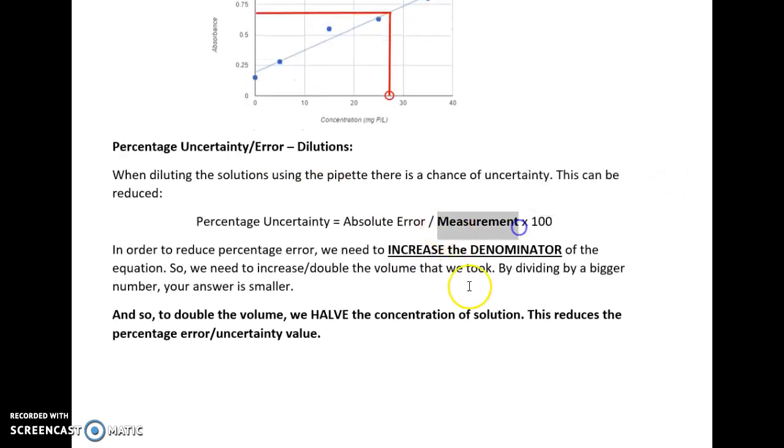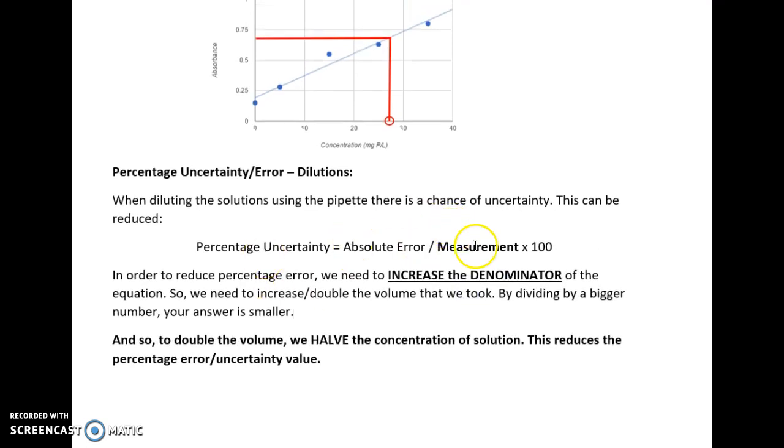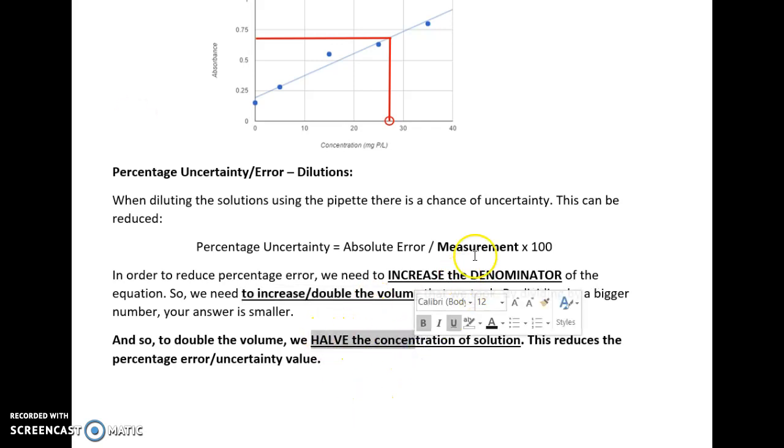So if our measurement is volume, so we work at percentage uncertainty when we're working with volume, the way to double the volume is to half the concentration, because concentration and volume are inversely proportional. So to increase the denominator, we need to double the volume we took, and we do that by halving the concentration. So half the concentration, that will increase the denominator. We will divide by a bigger number, therefore our answer will be smaller.